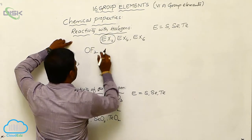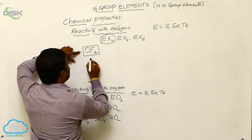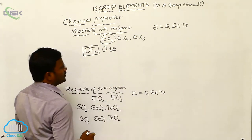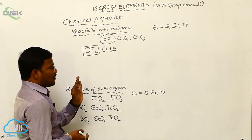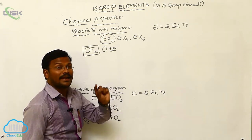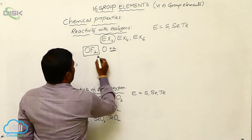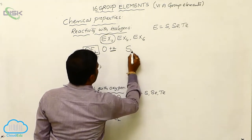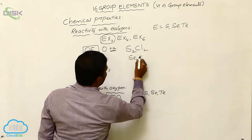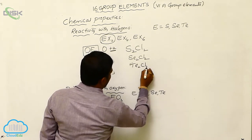The dihalides of Group 16: oxygen difluoride is the only chemical substance in which oxygen shows a +2 oxidation state, because oxygen is more electronegative and always shows a -2 oxidation state, except in OF2. These dihalides sometimes also dimerize and produce S2Cl2, Se2Cl2, and Te2Cl2 type dihalides.